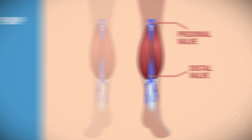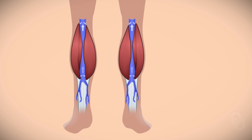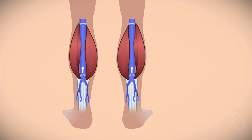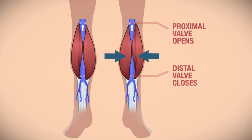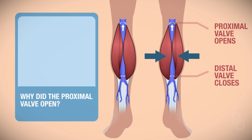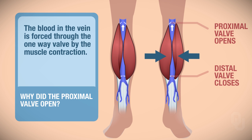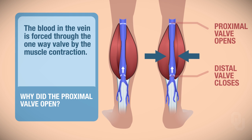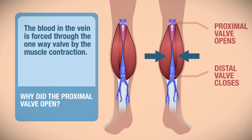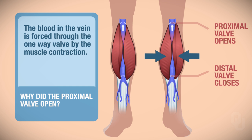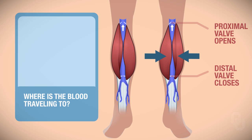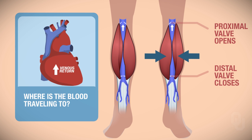Here we have a woman that is standing on her tippy toes. To be able to do that, her calves have to contract, which causes the distal valve to close and the proximal valve to open. Why did the proximal valve open? Since these are one-way valves, the blood in the vein was pushed upward, which pushed the valve open. The calf muscle contracts, the proximal valve opens, and the blood moves toward the heart, which will increase venous return.